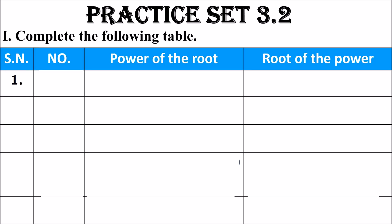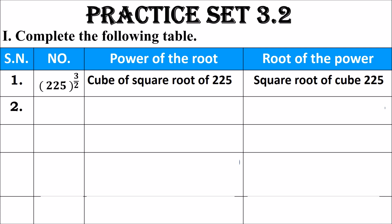Now we will do practice set 3.2 — complete the following table. Question 1: 225 raised to 3 upon 2. Looking at the column 'power of the root': the numerator is 3, so it is the third power or cube; the denominator is 2, so it is the second root or square root. Therefore it is the cube of the square root of 225. Written the other way as 'root of the power': it is the square root of the cube of 225.